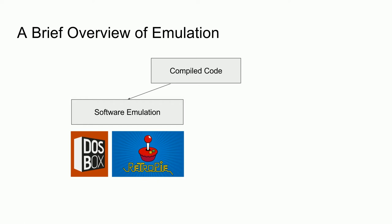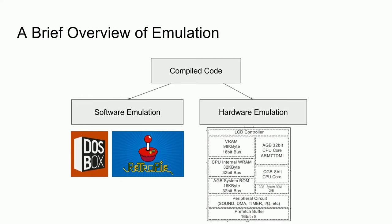The other main method for emulation is that of the hardware approach. A notable example of this would be in the Game Boy Advance, where the console had backwards compatibility with the Game Boy, which used a Z80 processor. The Game Boy Advance, however, used an ARM7 processor. So to solve the issue of backwards compatibility, the GBA CPU actually included a Z80 processor in hardware in addition to the ARM7 core. This method is not as common as software emulation, because it is often more expensive and harder to do.